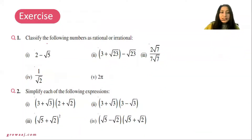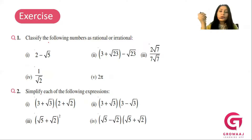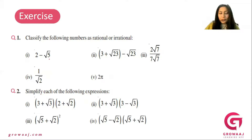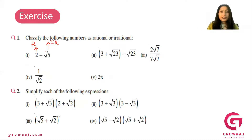Next, classify the following numbers as rational or irrational numbers. The first is 2 minus square root of 5. Here, 2 is a rational number and square root of 5 is an irrational number. So when you subtract them — when you have a rational minus irrational — then you have an irrational number.